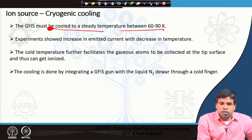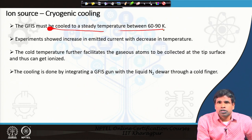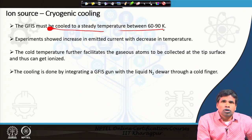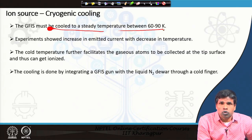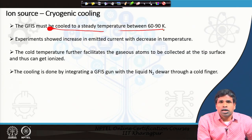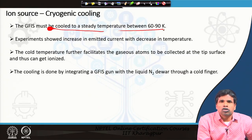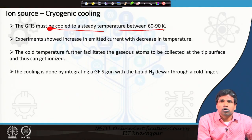We are producing the beam from a very fine tip, so any thermal motion of the tip is not acceptable. It has to be cold. If the tip is at a slightly higher temperature, the gas atoms will not come into contact with the ionization disk in an efficient manner to produce the beam of ions.